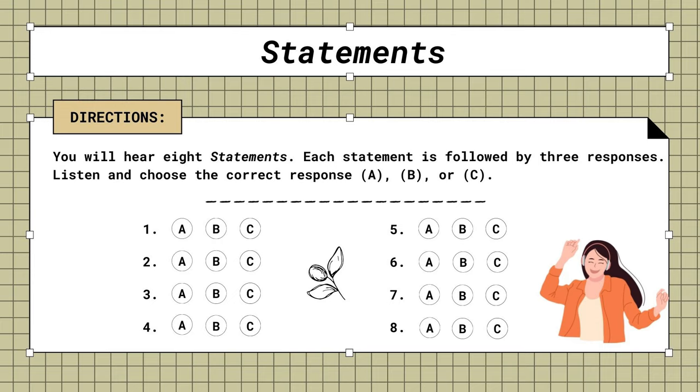5. Tony lost his car keys. A. He'll have to find them quickly. B. He arrived by car. C. He's always getting lost.